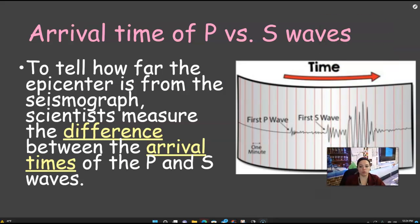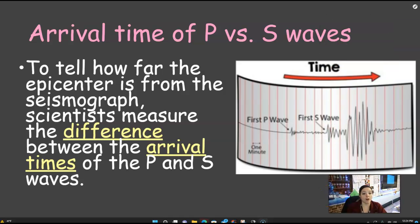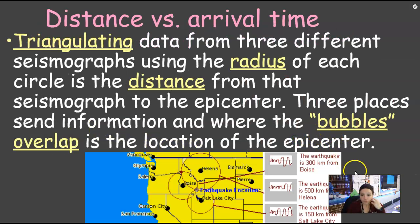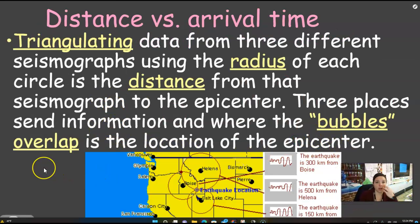Let's go back to the seismographs to show how far an epicenter is from the seismometer station. Scientists need to measure the difference between the S and the P wave arrival times — when they show up and are measured on the seismograph. Right here you can see where the P wave starts and where the S wave starts. If I take those two times and subtract them, I have minutes or seconds difference, and based on that I can find the distance.